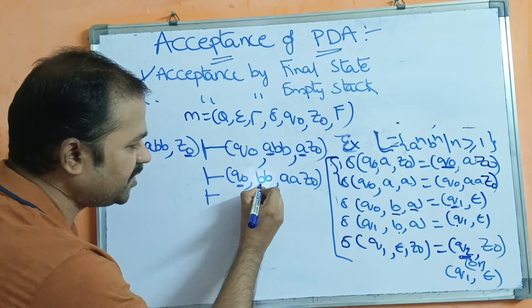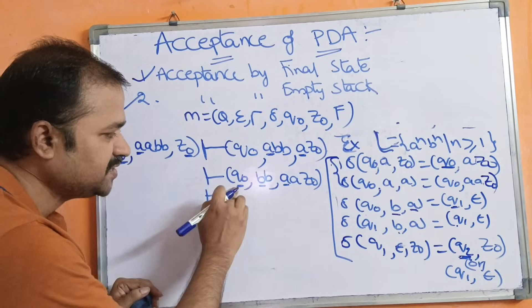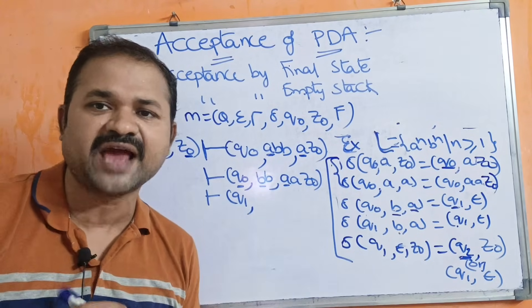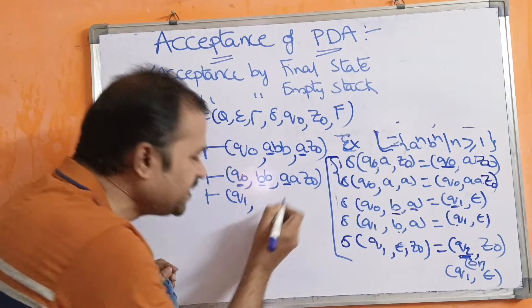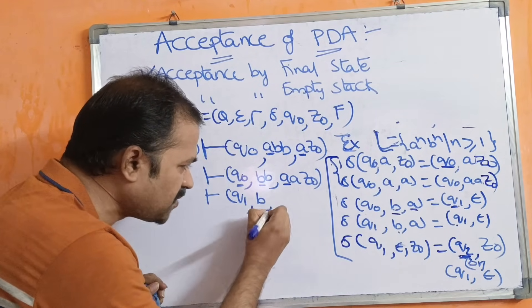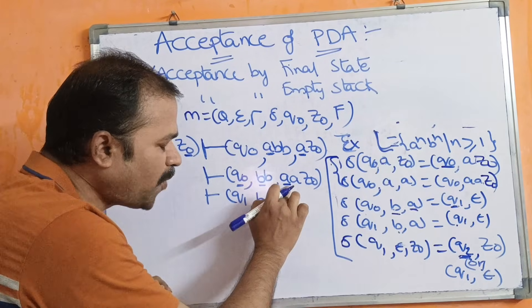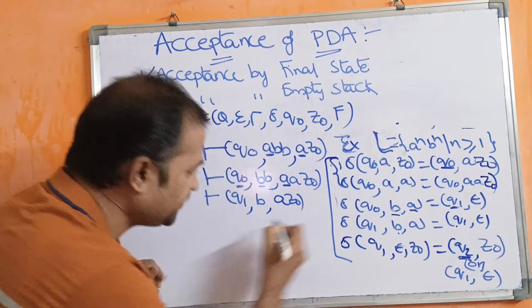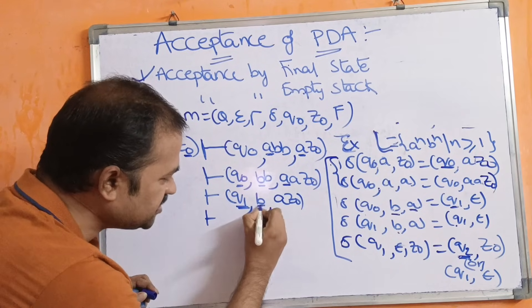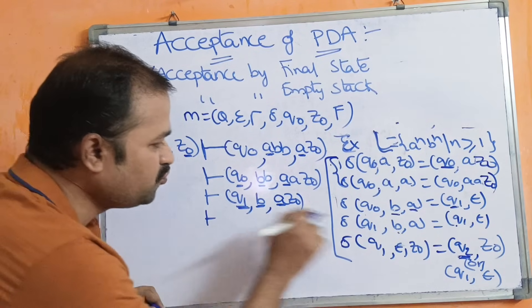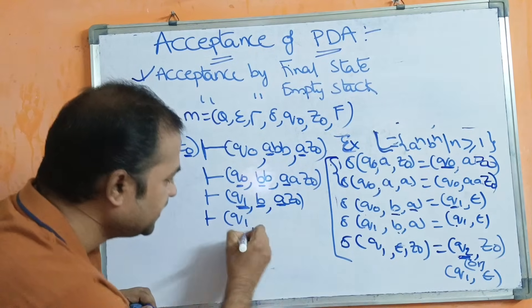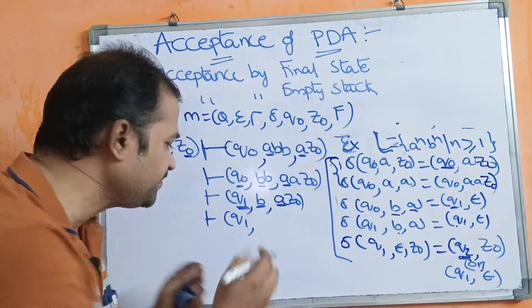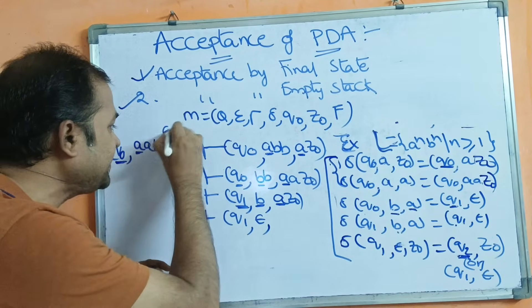Step 3: Current state is q₀, input symbol is b, stack topmost is a. Applying δ(q₀, b, a): we change state from q₀ to q₁ and perform pop operation (epsilon). b is processed, remaining string is b, stack after popping becomes a Z₀. Step 4: Current state is q₁, input symbol is b, stack topmost is a. Applying δ(q₁, b, a): we stay at q₁ and pop. b is processed, input string is now empty (epsilon), stack becomes Z₀.